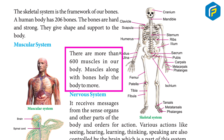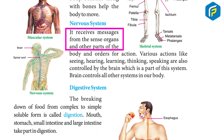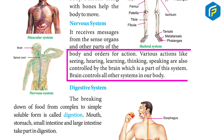Muscles, along with bones, help the body to move. The nervous system receives messages from the sense organs and other parts of the body and gives orders for action. Various actions like seeing, hearing, learning, thinking, and speaking are also controlled by the brain, which is part of this system. The brain controls all other systems in our body.